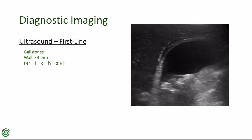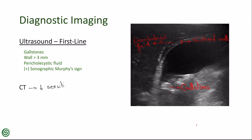Ultrasound is the first-line imaging modality. You're mainly looking for three key features: gallstones, thickened gallbladder wall greater than 3 mm, and pericholecystic fluid. A positive sonographic Murphy's sign is also helpful, especially if the patient has tenderness during the scan. CT scan has lower sensitivity but is useful to detect complications such as gangrene, perforation, or pericholecystic abscess.